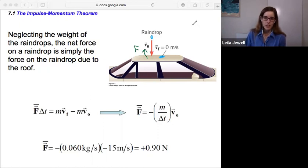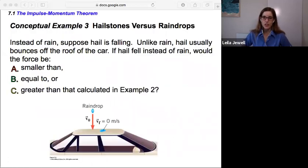even though we don't have to for this problem because it already specified what we're solving for. So with this in mind, let's take a look at a conceptual example. Conceptual example here says hailstones versus raindrops. Instead of rain, suppose hail has fallen. Unlike rain, hail usually bounces off the roof of the car. If hail fell instead of rain, would the force be smaller than, equal to, or greater than that calculated in the previous example? So I want you to think about this. Choose one of the answers before you move on, including the reason why. So go ahead and pause the video now.